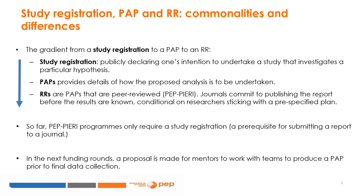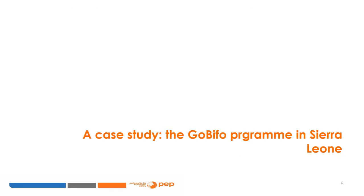Even if they choose not to, writing a PAP between baseline and end-line data collection is a time saver, as all that will be left to do to produce the final research report or article is to fill in the blanks. We are done for now with generalities. Let's go through an example to see how the tools for open science can help produce and publish better research.